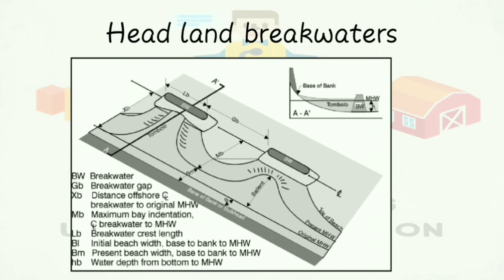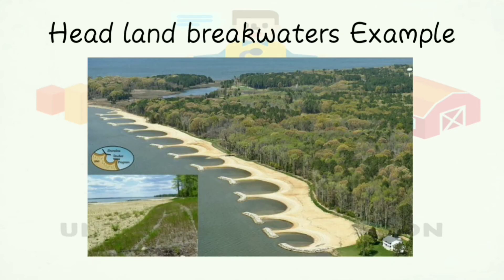For the headland breakwater example: where natural or artificially created waves affect the shore, the headland breakwater is prepared at such locations. The dimensions and required points for constructing the headland breakwater are described in the figure with alphabetical descriptions. If a headland breakwater is to be constructed, compared to a detached breakwater constructed parallel to the shore, the headland breakwater is constructed at a certain distance from the shore, following a continuous pattern as shown in the figure.